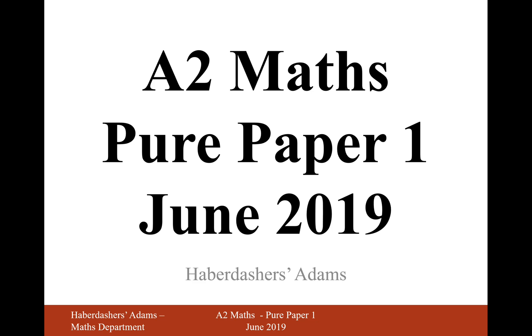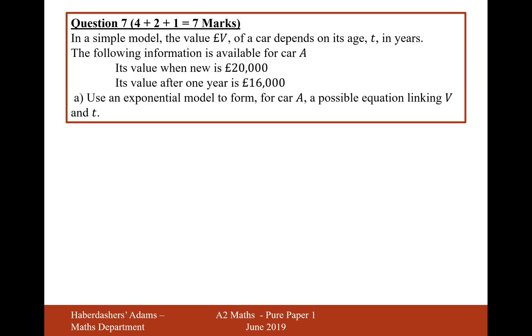Hello there and welcome to June 2019 paper 1 for A2 Maths. We're looking at question 7. In a simple model, the value V of a car depends on its age T in years. The following information is available for car A: its value when new is £20,000, the value after one year is £16,000.